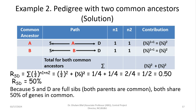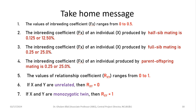The take-home message: values of inbreeding coefficients range from 0 to 0.5. The inbreeding coefficient of an individual produced by half-sib mating is 0.125; for full-sib mating, Fx = 0.25; and for parent-offspring mating, Fx is also 0.25. Similarly, values of the relationship coefficient can range from 0 to 1. If X and Y are unrelated, Rxy = 0; if X and Y are monozygotic twins, the relationship coefficient equals 1.